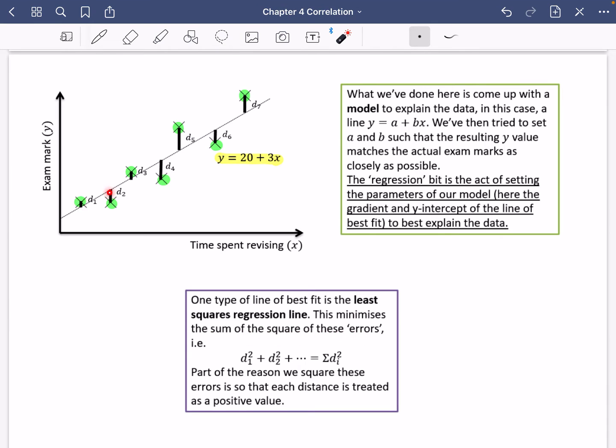What this does is it minimizes the sum of the squares of these errors. So all of these little lines I've drawn here, D1, D2, D3, D4, D5, D6 and D7, is how far away the points are from the line of best fit.